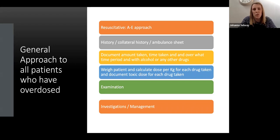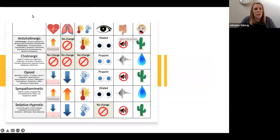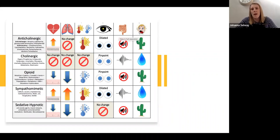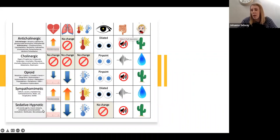Moving on to toxidromes — things to look out for. It's not an exhaustive list, but it gives you an idea. Is the patient tachycardic or bradycardic? Do they have an increased or reduced respiratory rate? Are they hot or cold? What do their pupils look like? Are they having GI symptoms, and are they dry or wet? Certain drugs follow certain patterns.